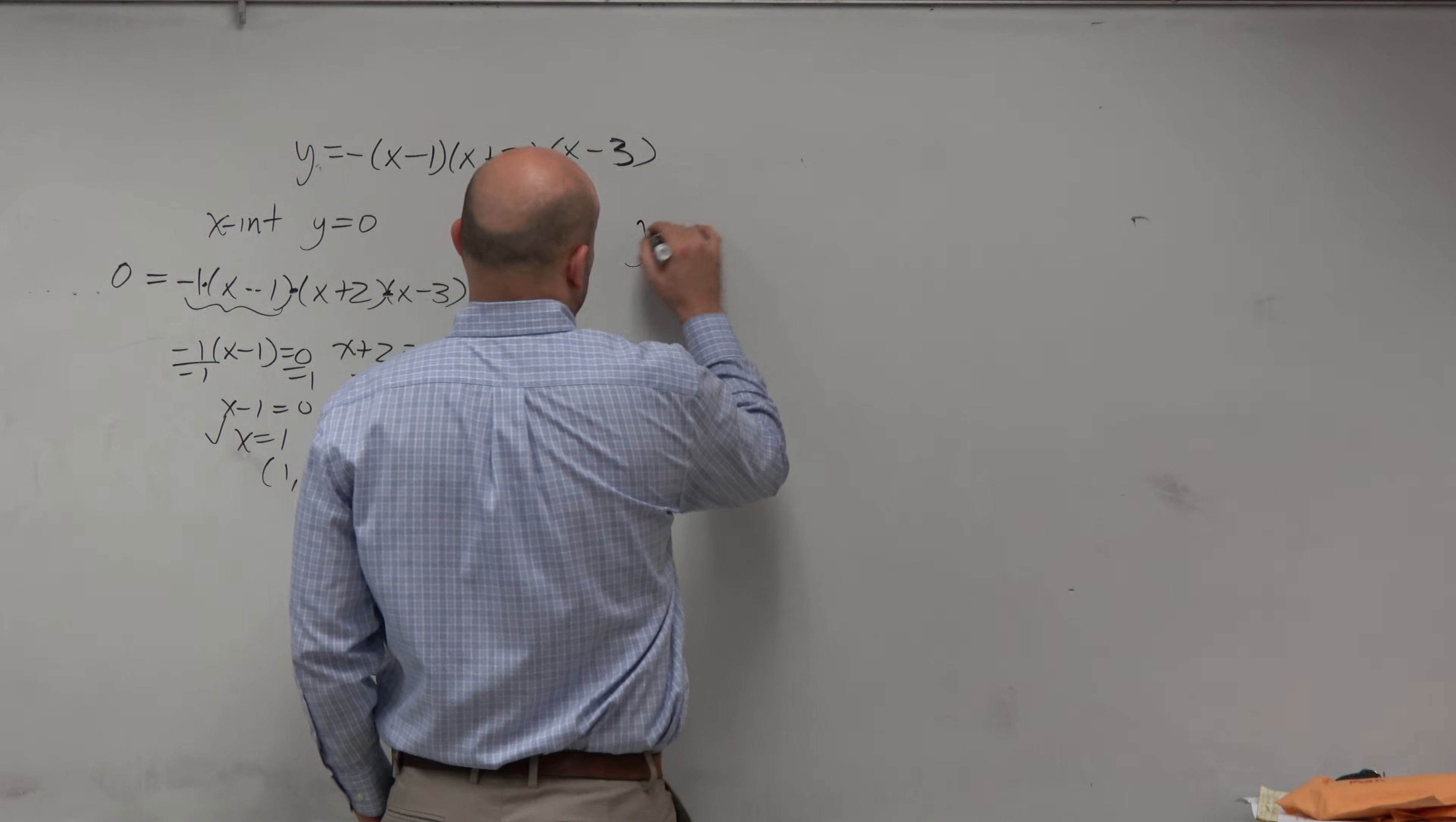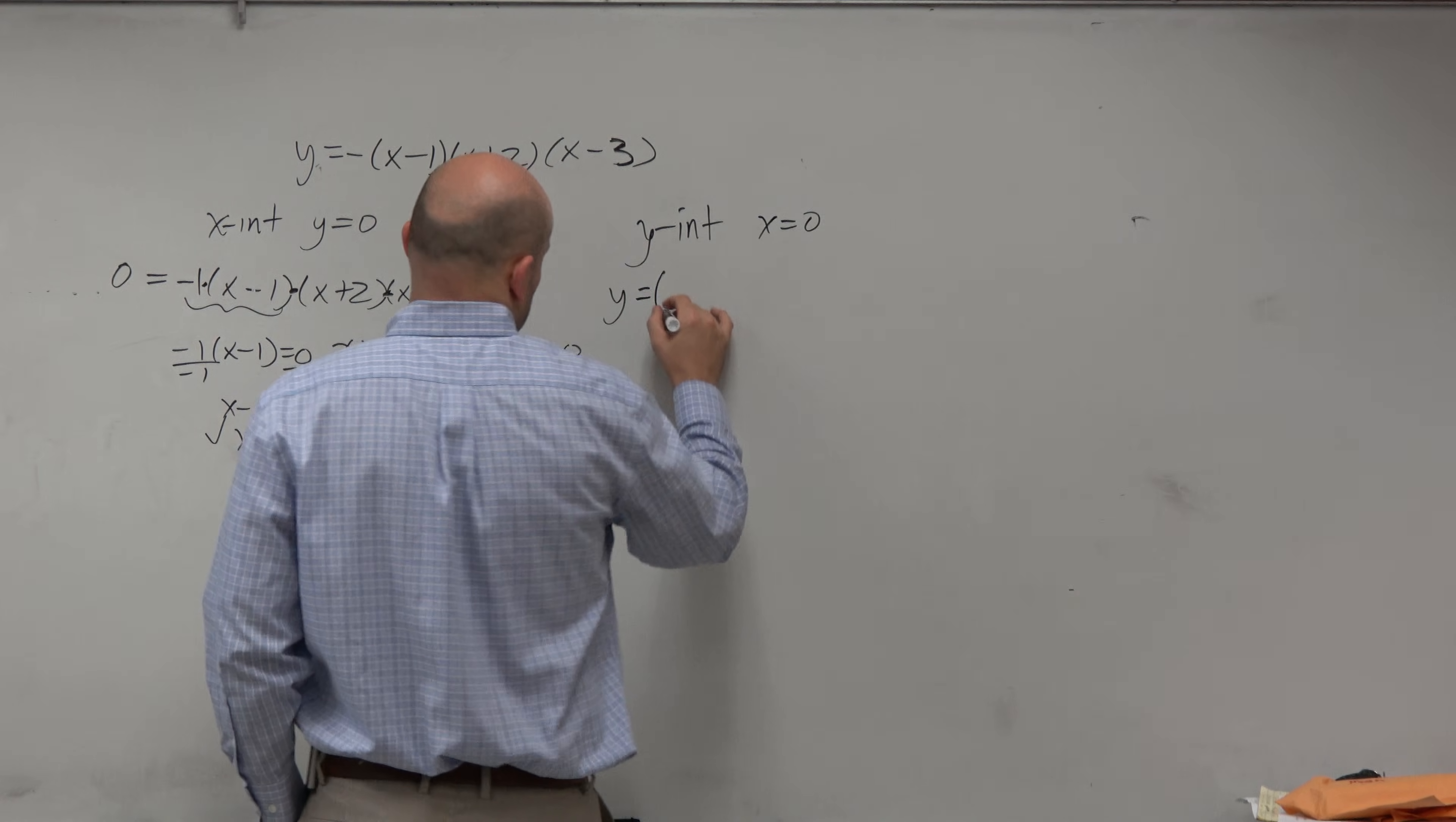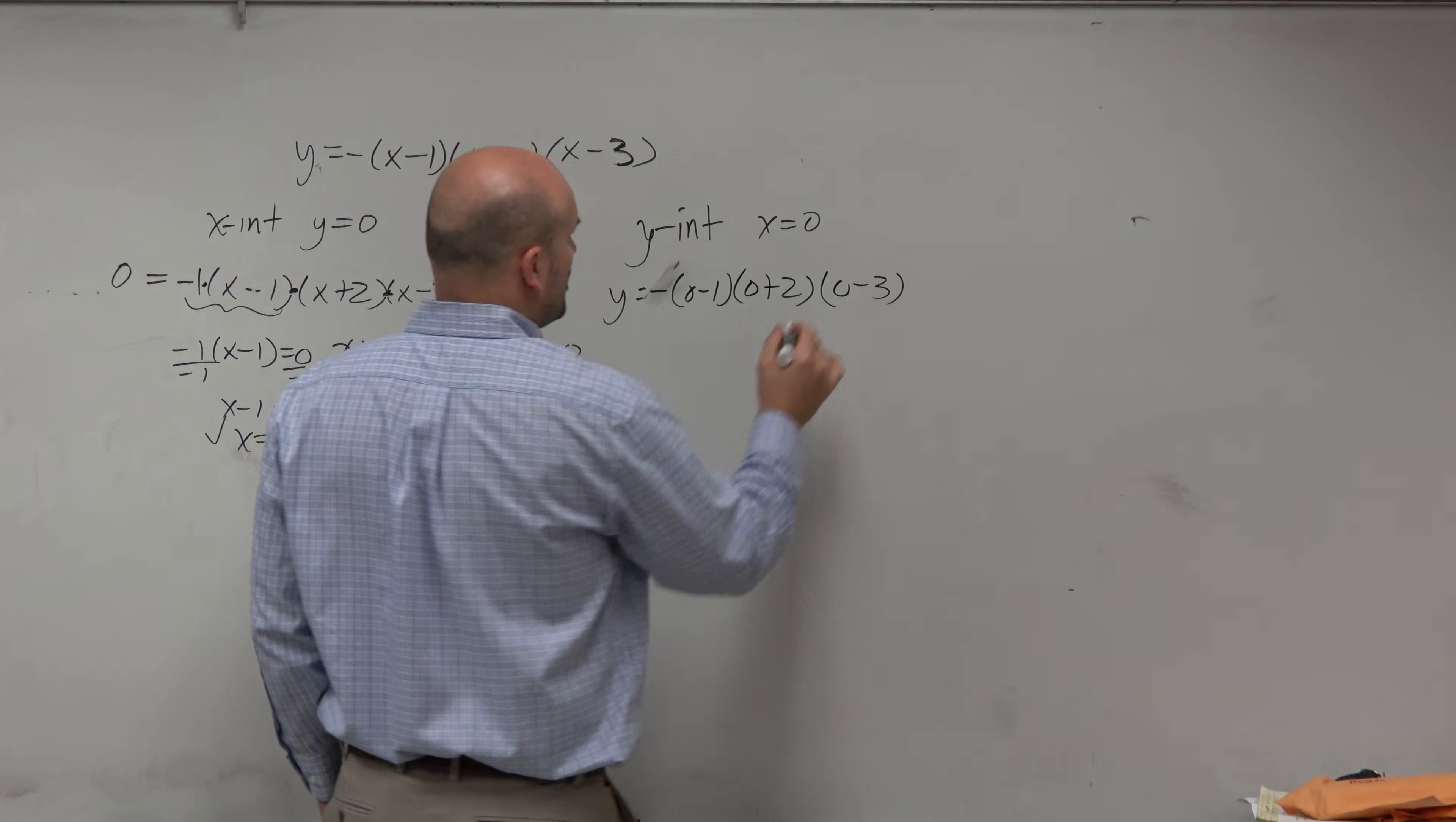Now the next thing we can do is look at the y-intercept, which is when x is equal to 0. So can I figure out where the graph crosses the y-axis? Sure, just plug 0 in for x. Oh, that's all we had to do, Mr. McGlughan? Yes, that's all you had to do, was just plug in 0 for each variable and then solve for the other.